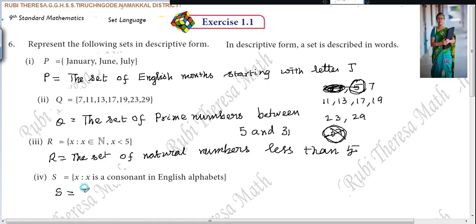The set of, what? English consonants. You have to add S. I told you, while you are writing in descriptive form, it is in plural. While you are writing in set builder form, it should be in singular. Descriptive form is plural, set builder form is singular. Just make a note of it.